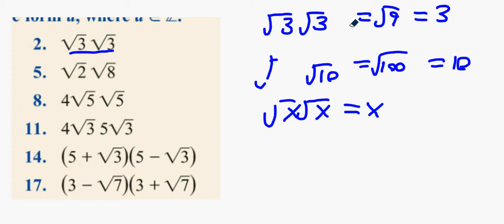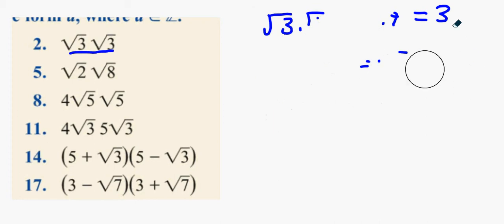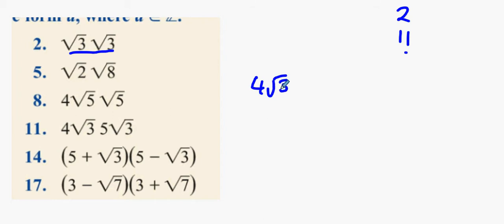The next thing we're going to do is question 11. So I did question 2. I'm going to do 2 and 11. Now, number 11, you see 4 root 3, and you also see 5 root 3. What I'm going to do is pair up the 4 and the 5 to get what? 20.